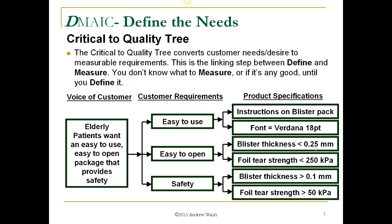Those customer requirements, in turn, can be turned into product specifications. Easy-to-use could translate to putting clearly written instructions on the blister pack — perhaps Verdana font size 18, something very easy to read. Easy-to-open could mean controlling blister thickness so it's not too thick, and keeping foil tear strength low enough to open, since many elderly patients have arthritis. Safety means the blister should not be too thin either, to prevent damage or contamination, and tear strength should not be too low to prevent tampering. As you can see, the voice of the customer can directly dictate the product specifications.